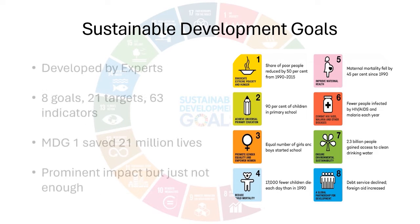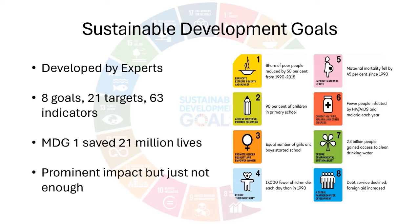It was developed by experts, focusing primarily on poverty reduction along with human rights, empowerment, and equality. Each goal had a specific target and a date to achieve those targets. In total, there were 8 goals, 21 targets, and 63 indicators.